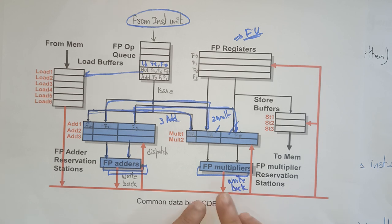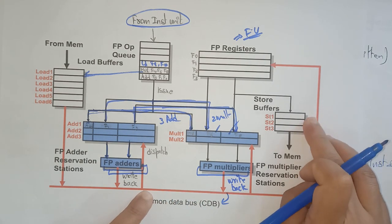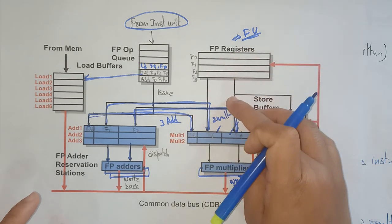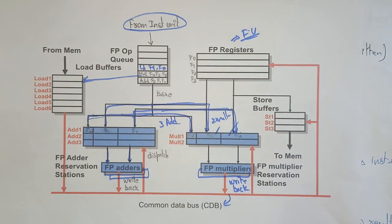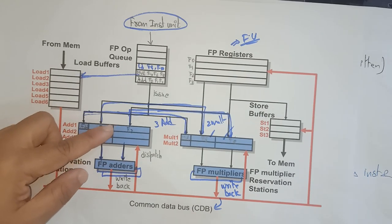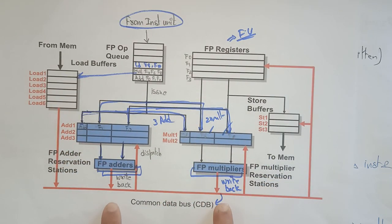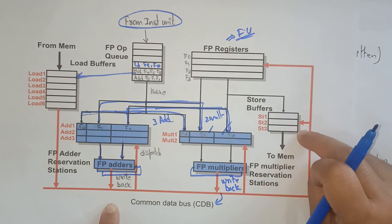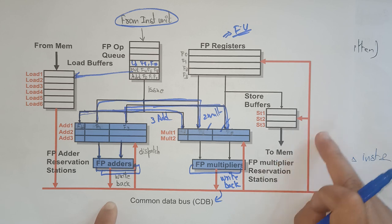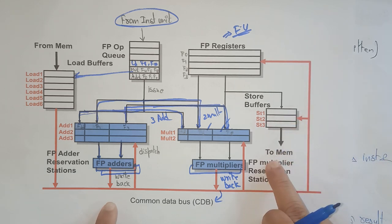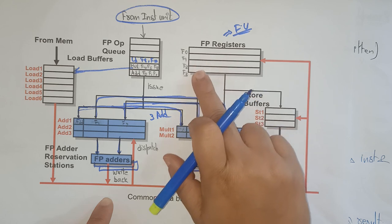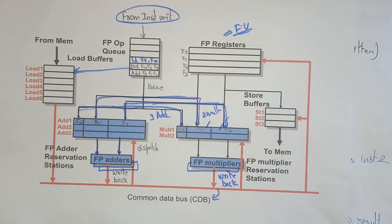The multiplier writes the result back to the common data bus, and this data goes back to the store buffers and the floating point registers. Whenever data dependencies exist, the data is sent to the common data bus and back to the floating point registers. If there are no dependencies, it executes and stores into memory. If dependencies exist, data is stored in floating point registers and sent again to the adders and multipliers.